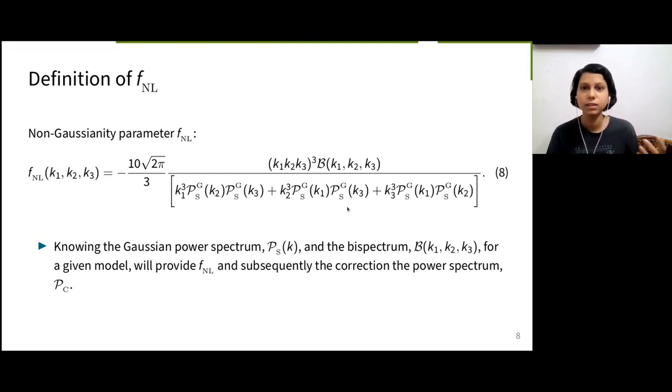Now, for a given model, if we know the Gaussian power spectrum PS and bispectrum B, we can easily write the FNL for that model and then write the corrected power spectrum for that model.